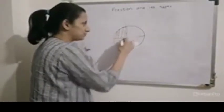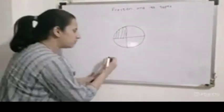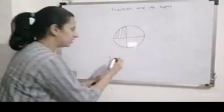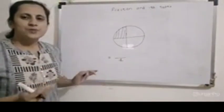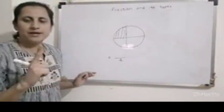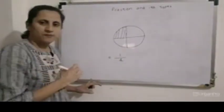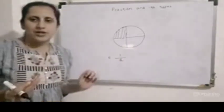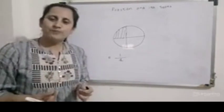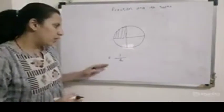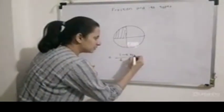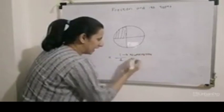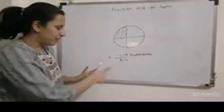and I ate only one part — so how many total parts are there? There are total four parts, and I ate only one part out of the total. So the fraction I ate of the roti is one by four. The part written on the upper side is called the numerator, and the part written at the bottom is called the denominator.